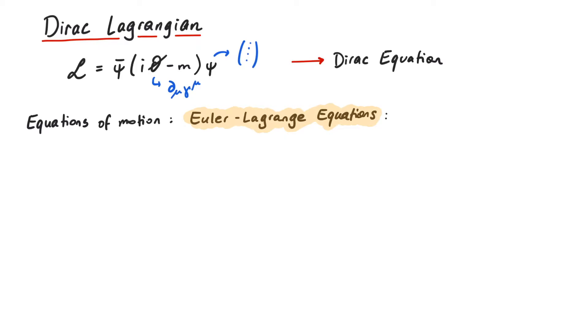The Euler-Lagrange equations say that the derivative of the Lagrangian with respect to a certain field equals the derivative of the derivative of the Lagrangian with respect to the derivative of the field. That was tough to say, but it should be pretty clear from the equation. Now how do we apply this to the Dirac Lagrangian?